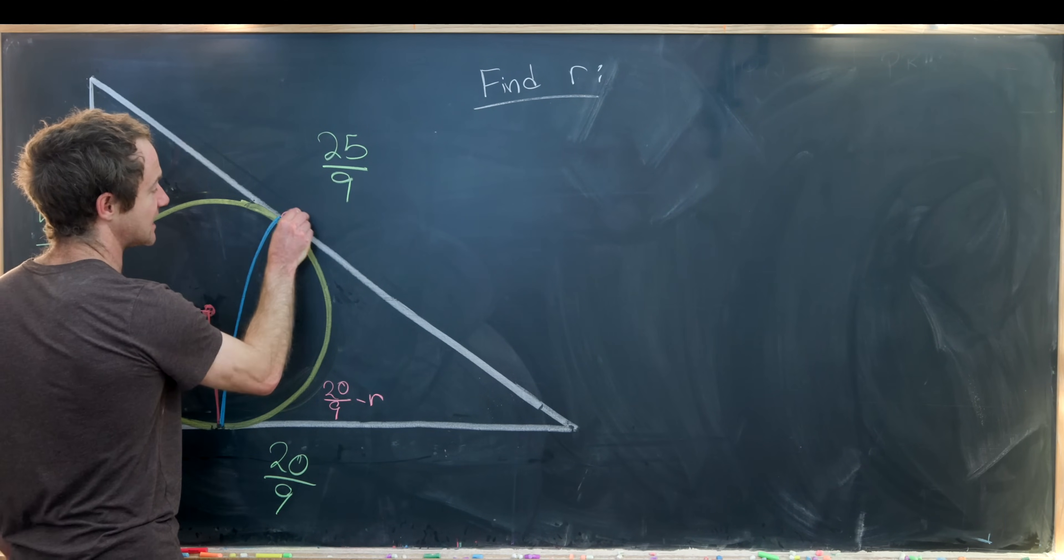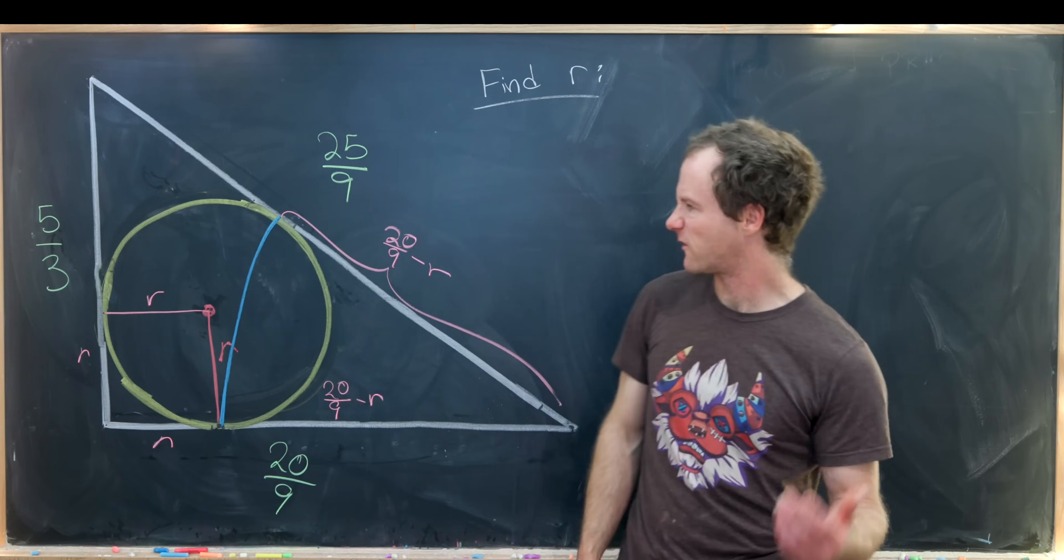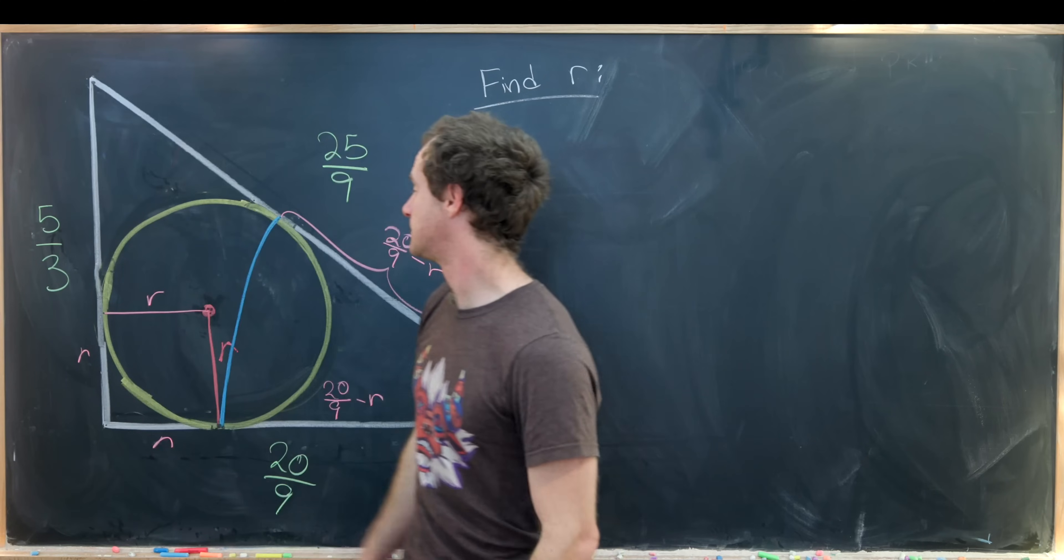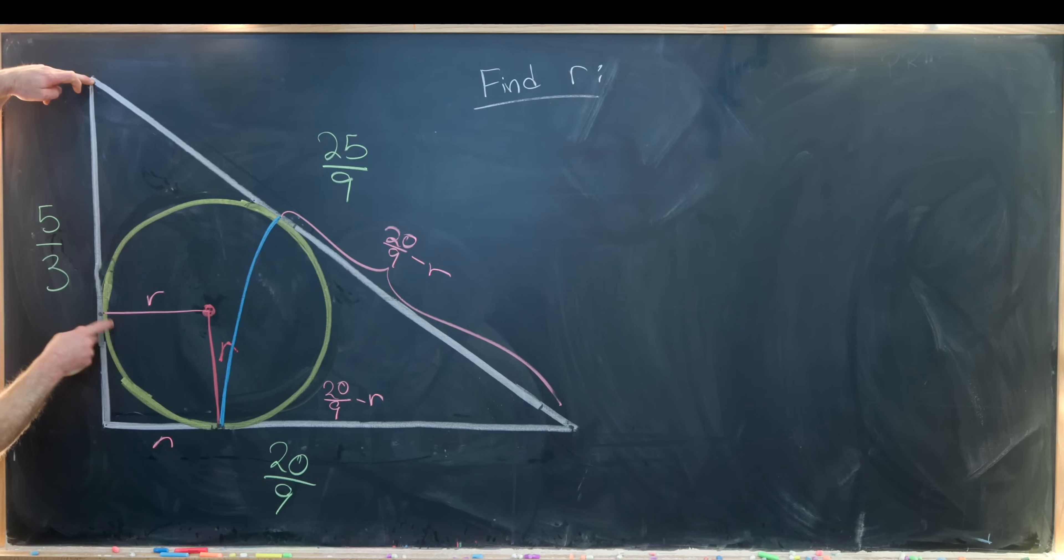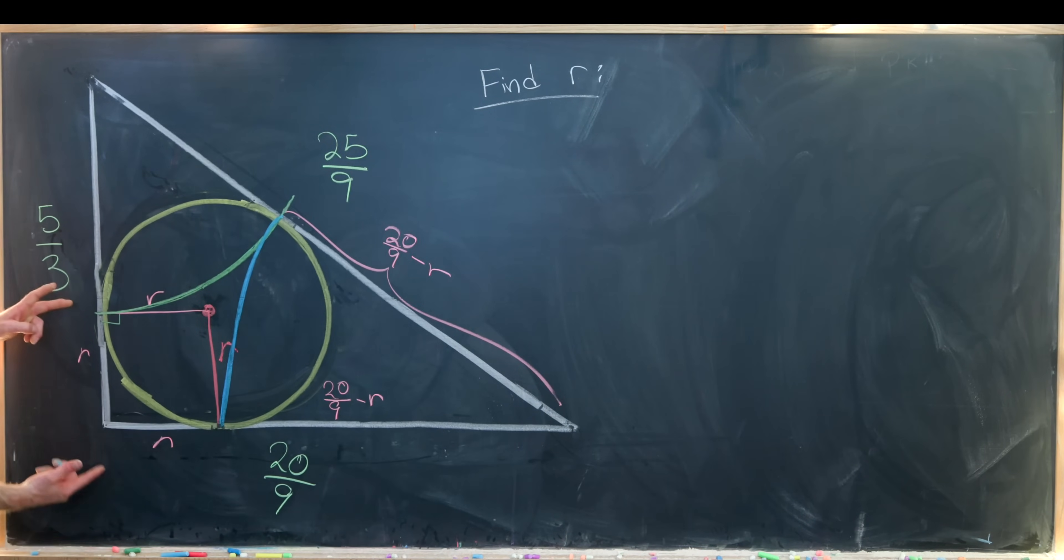That means that this length right here is also 20 over 9 minus the radius. Now we'll introduce another circle that'll finish it off. The last circle will be centered up at this vertex, and it will have a radius given by the distance from this vertex to this point right here, where again, this is a right angle. This length right here is r, this entire length is 5 thirds, so that means this bit left over is exactly 5 over 3 minus r. Since this is the center of the circle and this is an arc of the circle, that means that this length right here is indeed also 5 over 3 minus r.